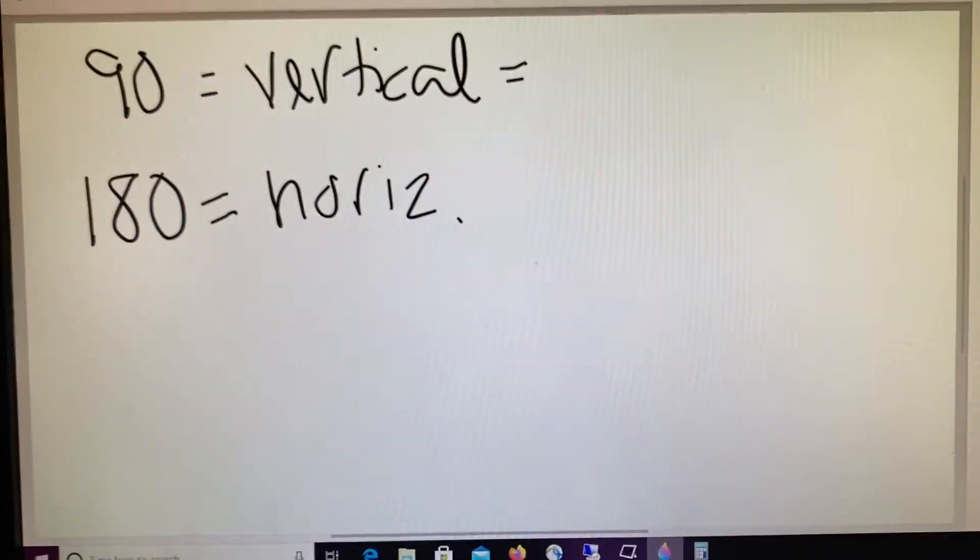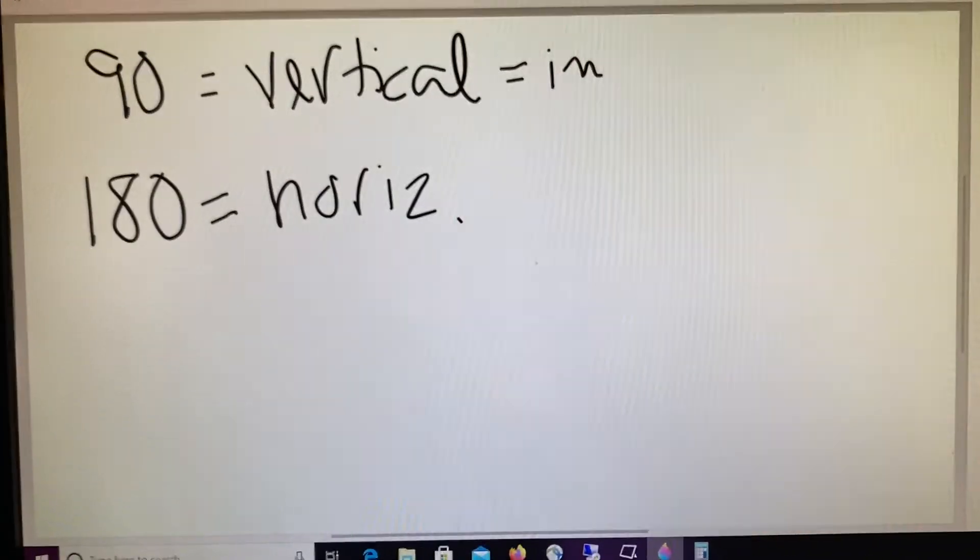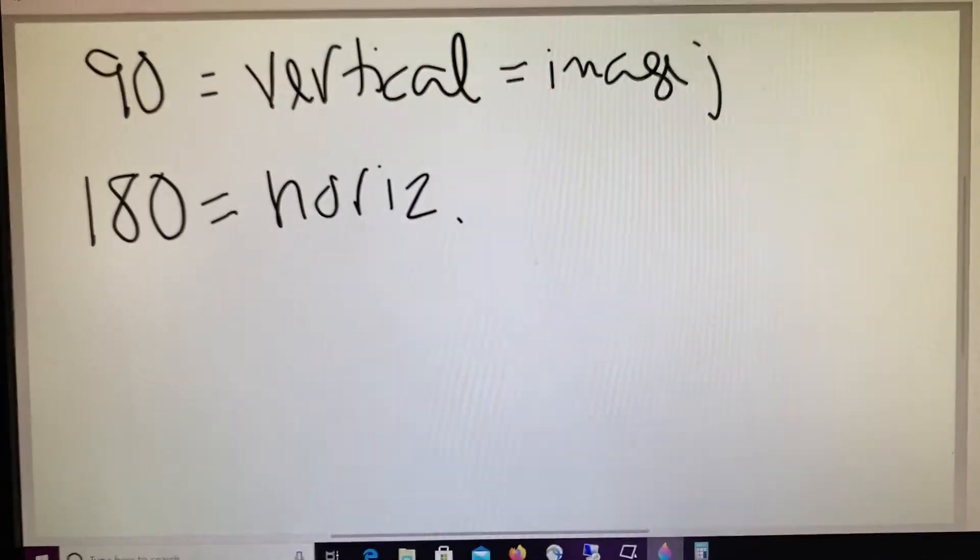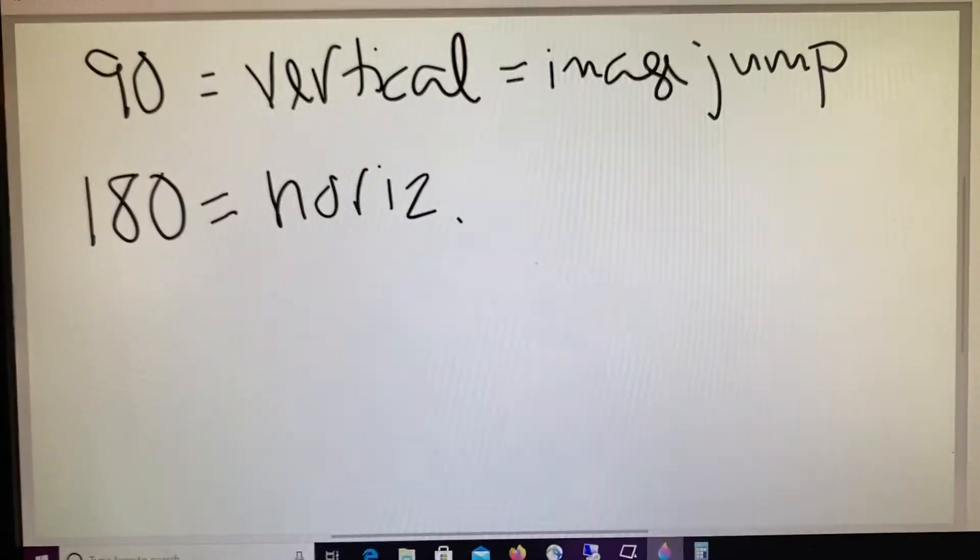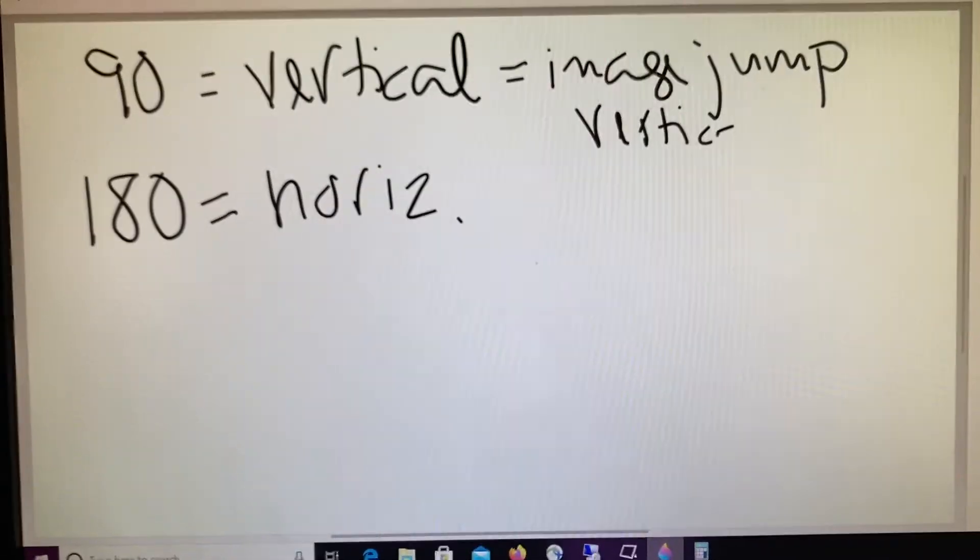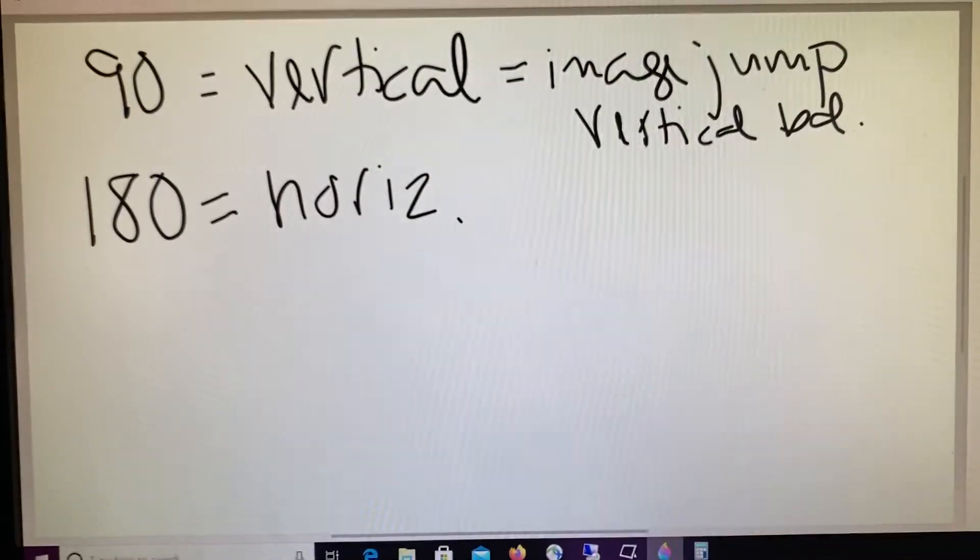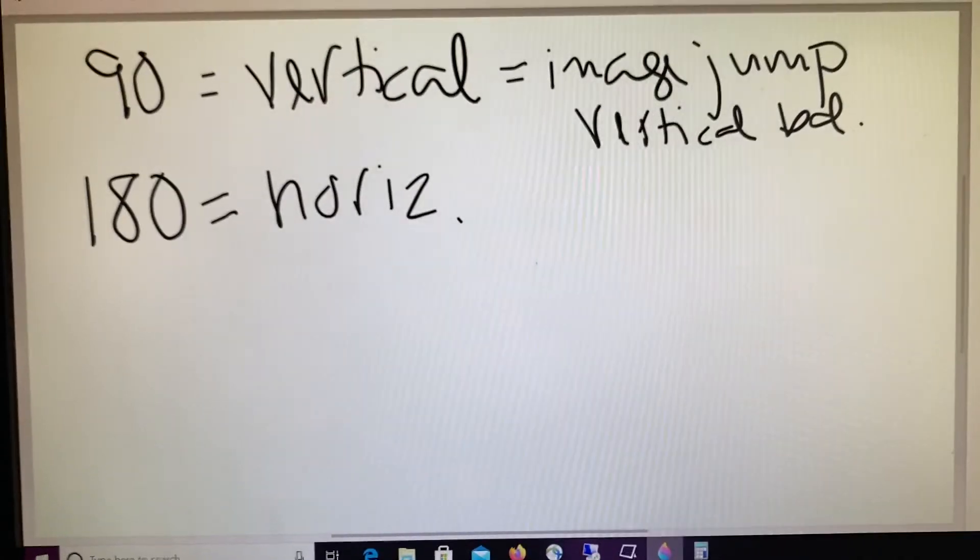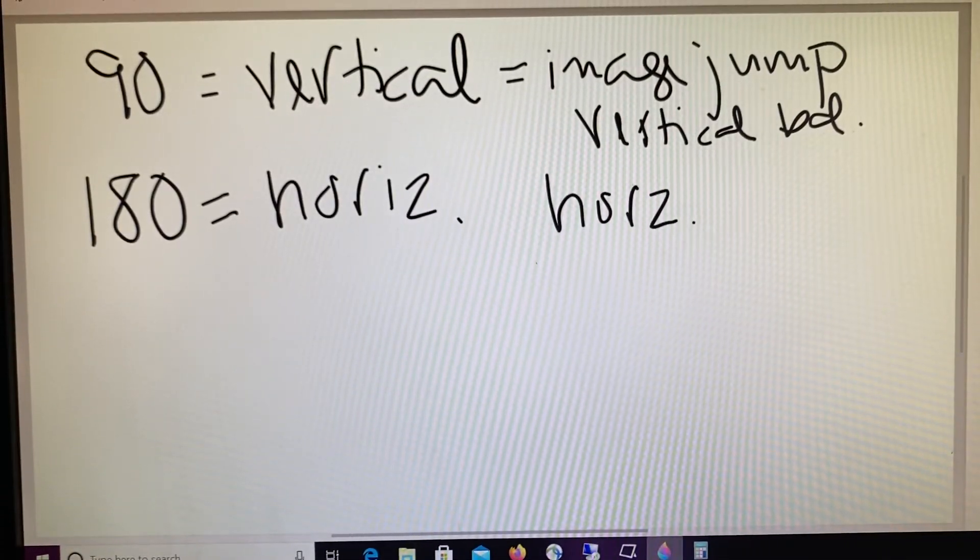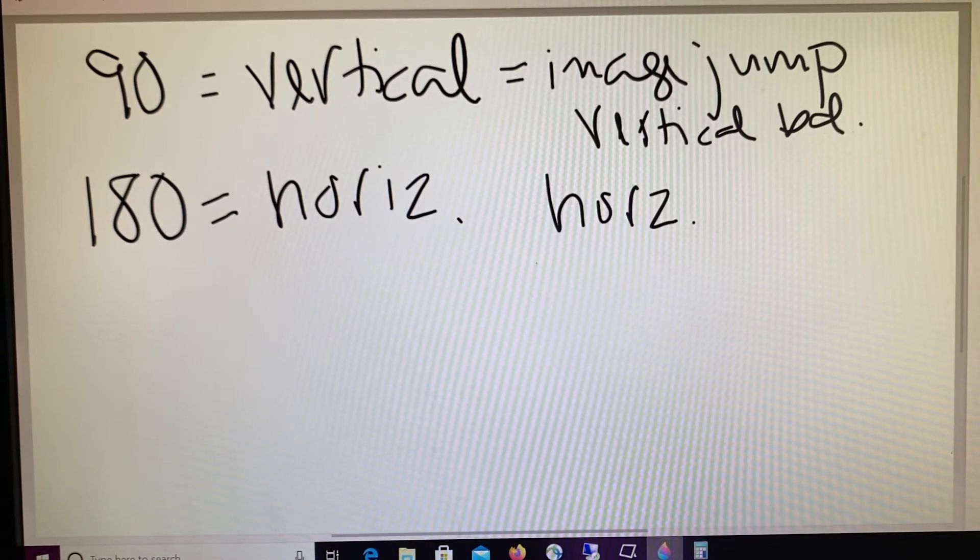So remember, vertical is going to be image jump or vertical imbalance, and horizontal would be horizontal prism. For example, if the glasses were made incorrectly. So that's why we're often working in the 90th or 180th meridian. Let's just make sure that we're comfortable with that here really quick.